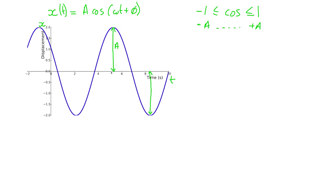Our equilibrium position is when x is equal to 0, so this line is x equals 0. Our displacement from that is A, and so A is just the amplitude.